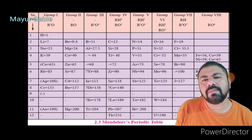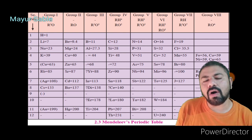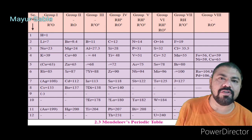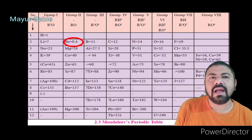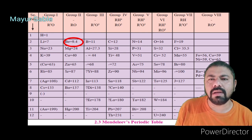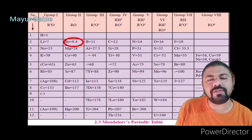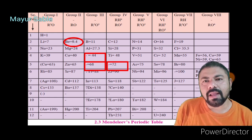Mendeleev applied atomic masses as the periodic function to all known elements and arranged them into the periodic table. This demonstrated many merits. The first merit is that atomic masses of elements were revised to give them a proper place in accordance with their properties. For example, beryllium's atomic mass was previously considered as 14.09, but the correct value was found to be 9.4, and beryllium was placed before boron.